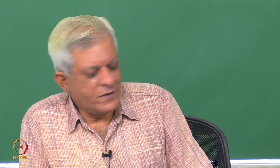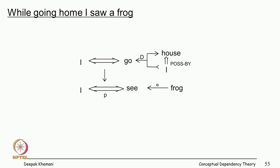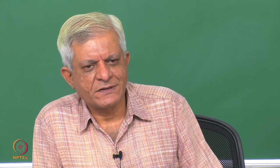'While going home I saw a frog' — one conceptualization is a time stamp for another. The first conceptualization says I was going home to my house, and the second says I saw a frog; the first is the time context for the second. We will stop here; in the next class we will continue looking at representations in conceptual dependency theory.